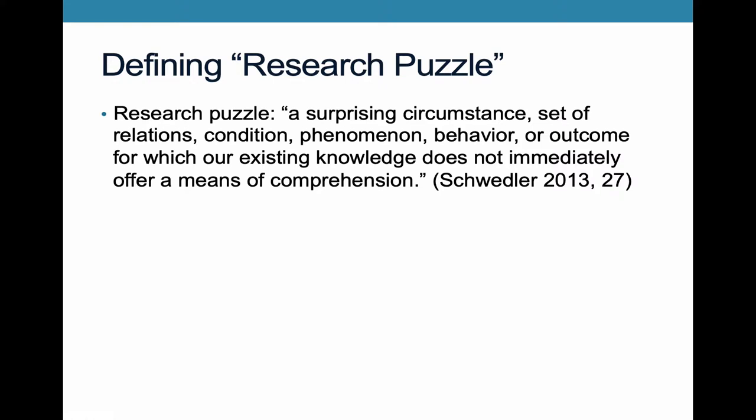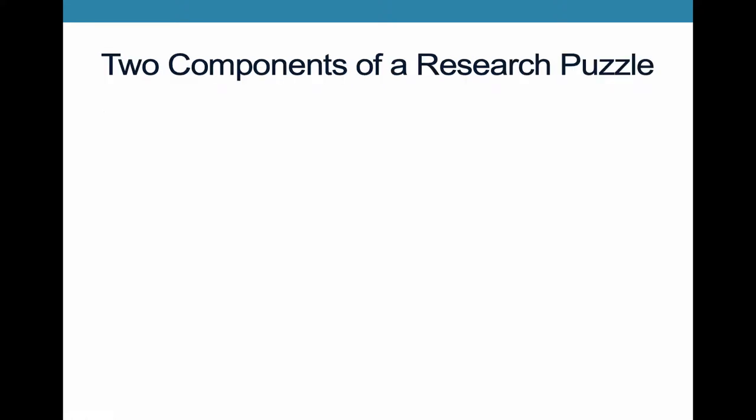So what are the components of a research puzzle? There are two parts to a research puzzle. The first, most obvious, is a statement of the research question. So this is simply saying what is the question that your study is going to answer that by the end of completing the entire research project you'll have the answer to. But just stating the research question isn't enough to get to a research puzzle because you also need the second part.